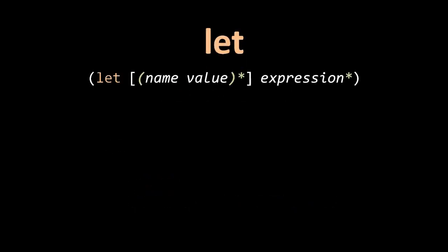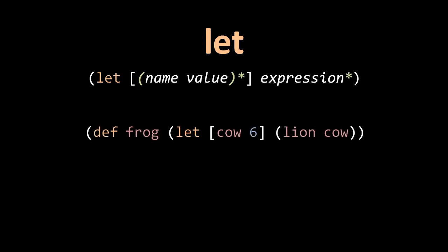The let special form is like do except it adds the ability to bind values to names, so you can establish a name — say foo — which has some certain value. These name-value pairs are written inside a vector, and the reason it's a vector is that the square brackets are easily distinguishable so you can tell what parts are the name-value pairs and what parts are the expressions. So here we have a def for the name frog, and the value being assigned to frog is the value returned by this let. The let has one expression — a call to lion with the argument cow — and in the vector we are binding the value six to the name cow. So inside this let the symbol cow resolves to the value six; it's a local variable effectively. Frog is going to be assigned whatever is returned from calling lion with the argument six.